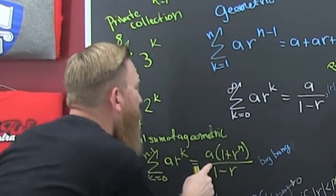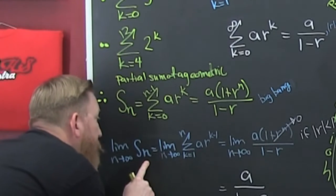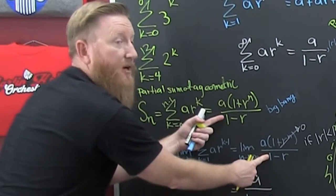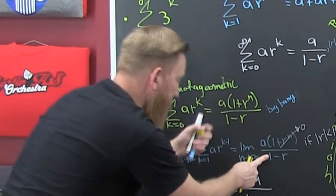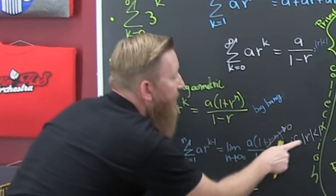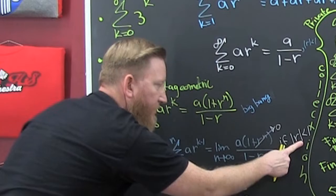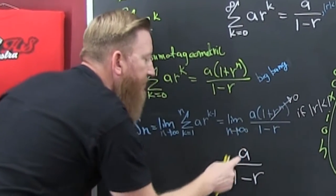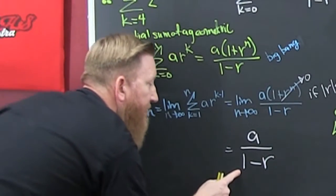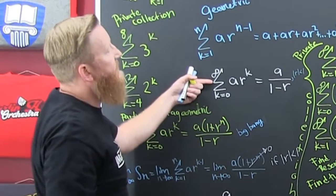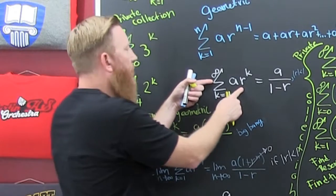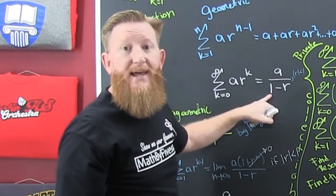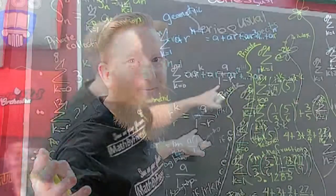If we look at this, the partial sums of that geometric as n goes to infinity give us this, because this derivation is also in the private collection. But if our r is a proper fraction, then that fraction raised to a power is going to go to zero, and the geometric is going to sum to this. So the infinite sum of a geometric series is going to equal that ratio.